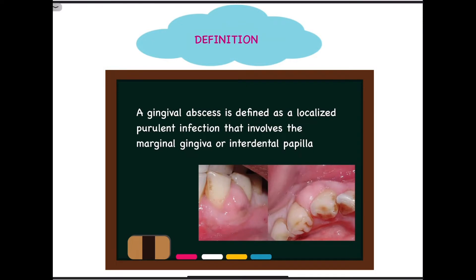Moving on towards the definition of gingival abscess: according to Carranza, a gingival abscess is defined as a localized purulent infection. Abscess means a localized collection of pus, so gingival abscess is basically a localized kind of infection which involves pus — by the word purulent, we mean it involves pus — and it involves the marginal gingiva or the interdental papilla.